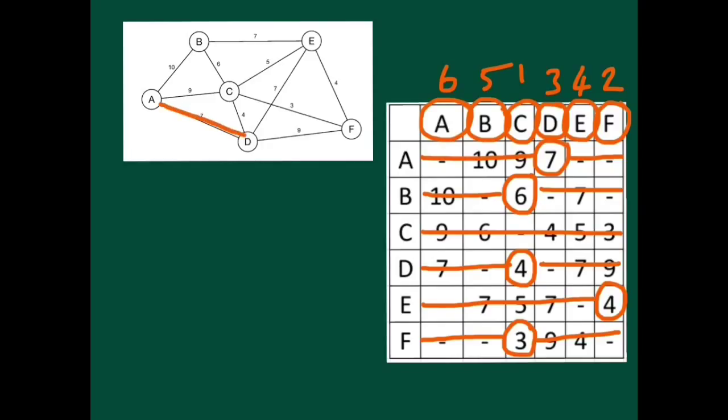The next one connects B and C, connecting that one, then we have D and C, that's there, E and F is that one, and lastly F and C, and there we have our minimum spanning tree.